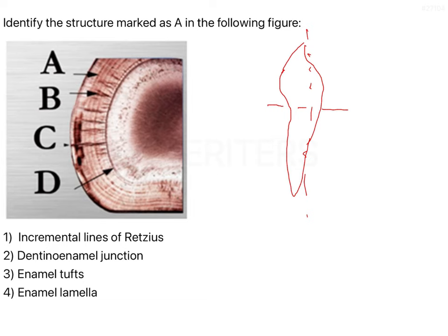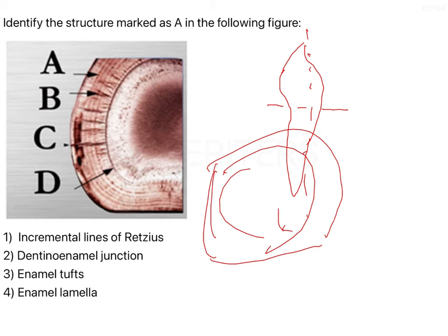As we know, enamel when it is being laid down is laid down in increments. It is not a continuous process where the whole enamel is laid down and calcified. Ameloblasts secrete the matrix, which gets 30 percent calcified, and then the rest of the calcification occurs. Once this calcification occurs, ameloblasts then secrete again another matrix that also gets calcified.